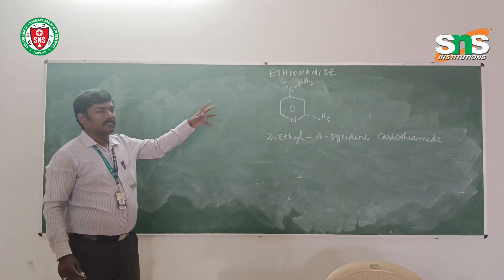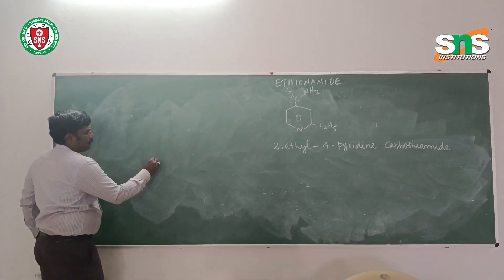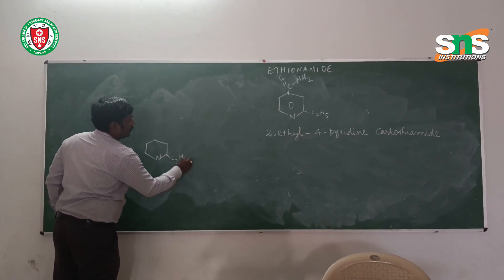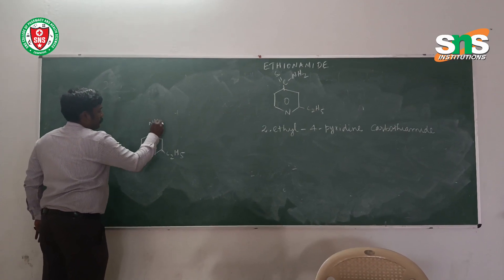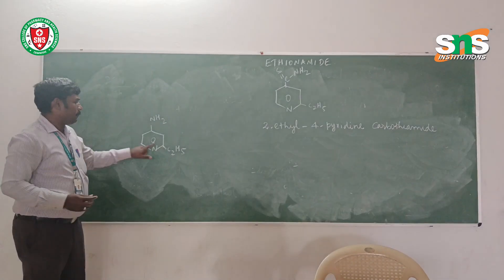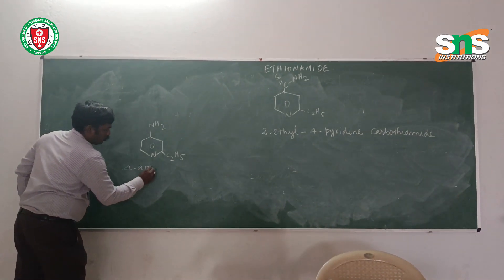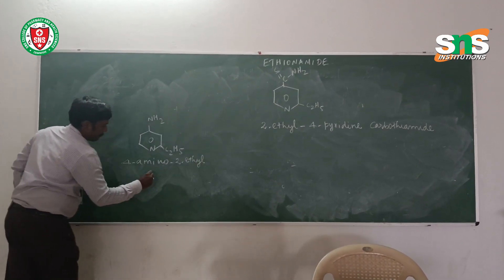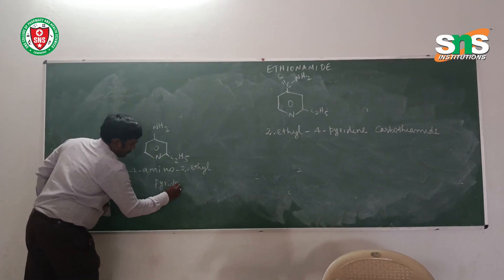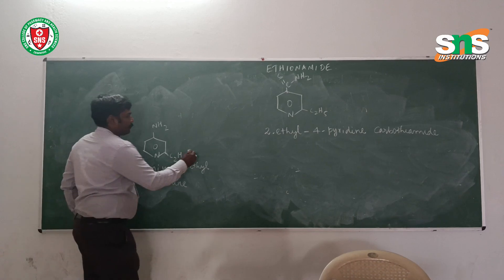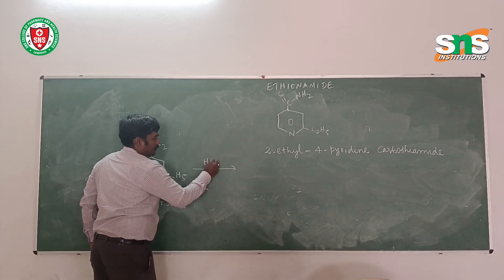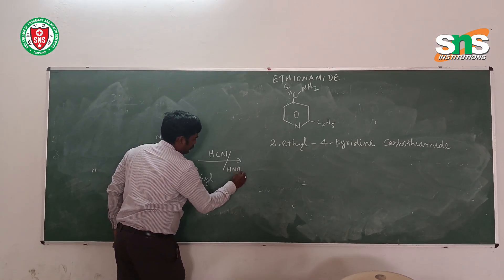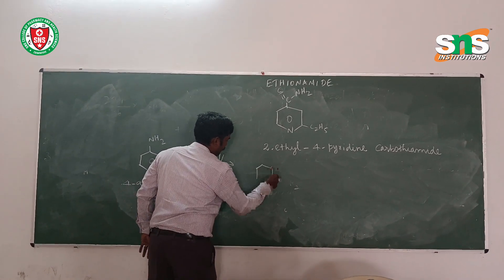To synthesize ethionamide, we start with 4-amino-2-ethylpyridine. This starting material is treated with hydrogen cyanide (HCN) in the presence of nitric acid, which gives the cyano derivative.